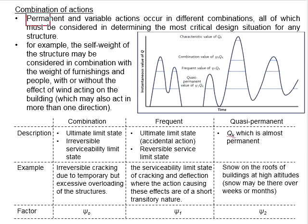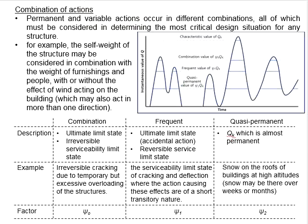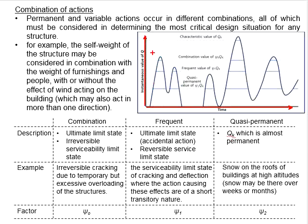Permanent and variable actions can occur in different combinations. Since variable actions are not constant throughout the service life of the structure — they can be present or absent — this is demonstrated by the fluctuations of the curve, where the y-axis represents the magnitude of the variable actions and the x-axis represents time.